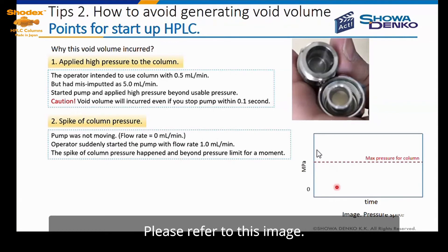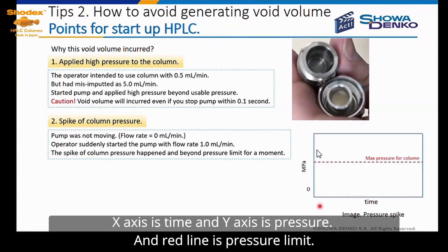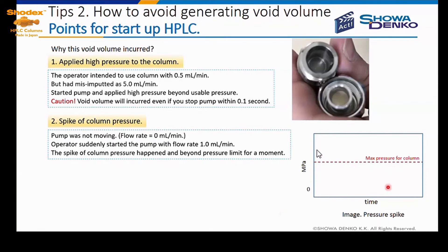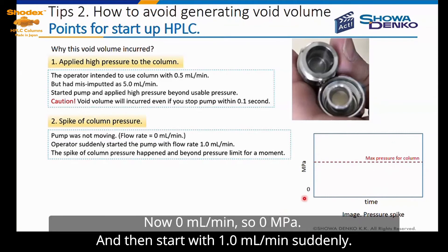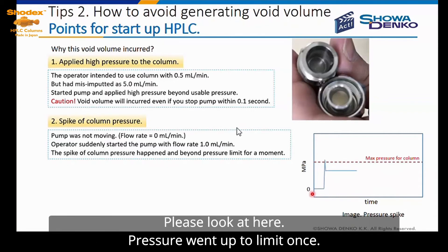Please refer to this image. The X-axis is time and the Y-axis is pressure. The left line is the pressure limit. Starting at 0.0 ml per minute, then increasing to 1.0 ml per minute — please look here: the pressure went up to the limit once.